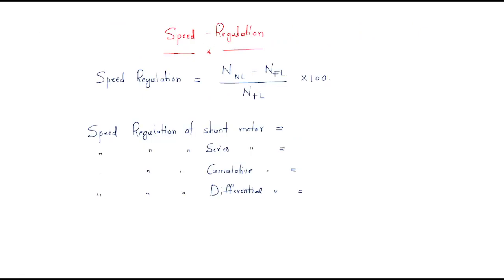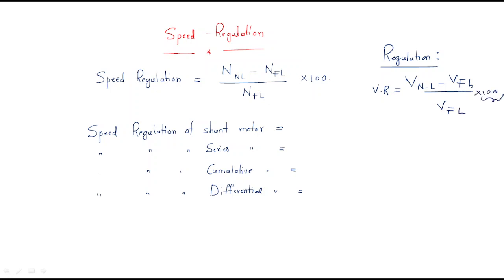The next topic is speed regulation. Just as we discussed voltage regulation for transformers — voltage regulation equals V no-load minus V full-load divided by V full-load into 100 — replacing voltage with speed gives speed regulation: speed regulation equals no-load speed minus full-load speed, divided by full-load speed, into 100. Generally, for a shunt motor, no-load speed is higher and full-load speed is lower, giving a positive speed regulation.